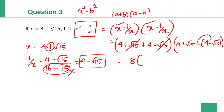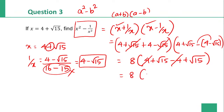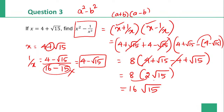x minus 1 by x: minus of 4 minus 4 cancel. Root 15 plus root 15 is 2 root 15. So 8 into 2 root 15. 8 into 2 is 16. So 16 root 15. The answer is 16 root 15 is the right answer.